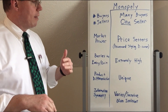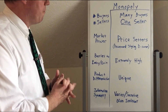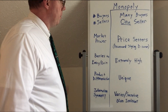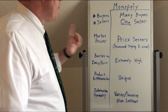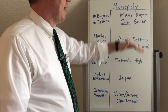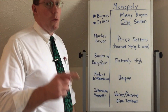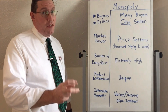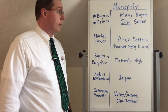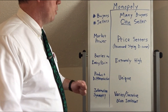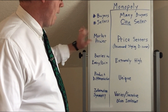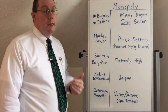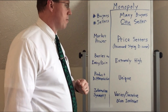Let's review the dimensions of market structure in monopoly. Number of buyers and sellers: monopolies have many buyers but only one seller — the only one. One company is selling that product. And because they're the only seller, their market power means they are price setters. They have all of the power to set the price for the product they're selling.